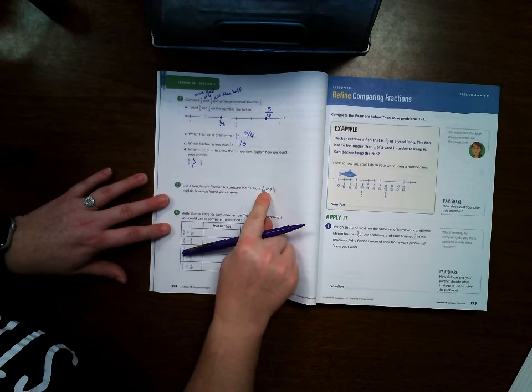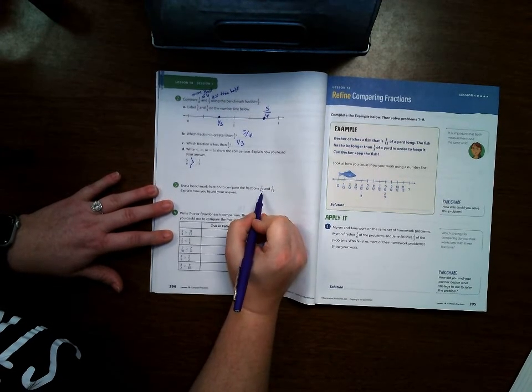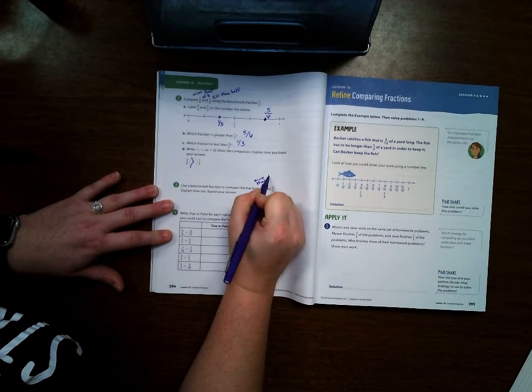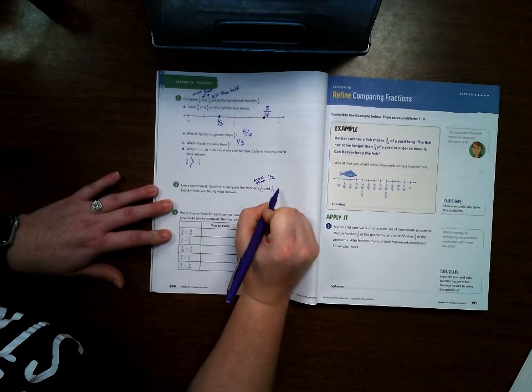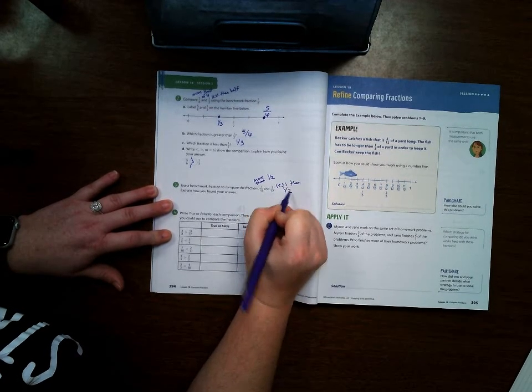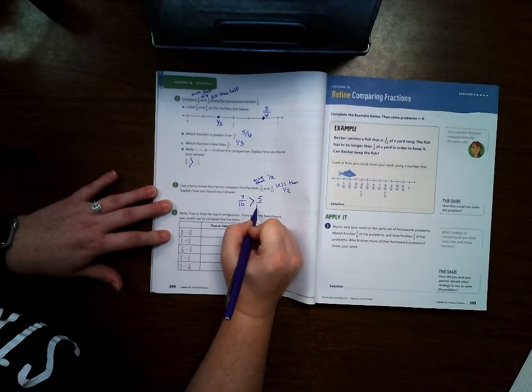Use benchmark fractions to compare. Well, seven-tenths is more than one-half. Five-twelfths is less than one-half. So that means seven-tenths is greater than five-twelfths.